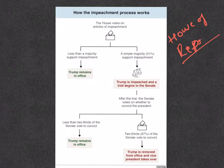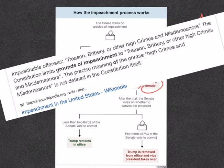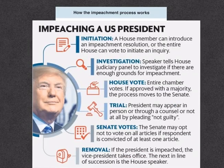If the House approves articles of impeachment, the president would then be subject to trial in the US Senate, the upper house. A president can be impeached for treason, bribery, or other high crimes — treason meaning the crime of doing something that could cause danger to your country. To begin impeachment proceedings, a House member can introduce an impeachment resolution or the entire House can vote to initiate an investigation. The House Judiciary Committee or a special committee will investigate and vote on whether to bring a vote to the full House. The impeachment resolution must be approved with a simple majority.